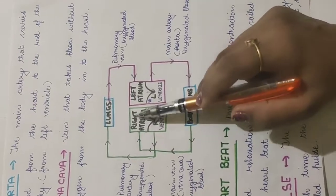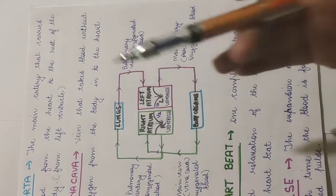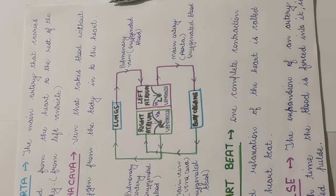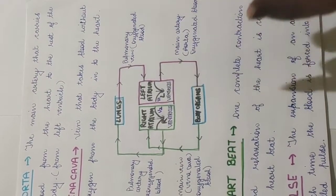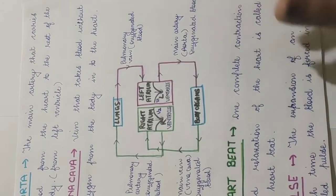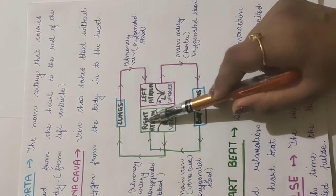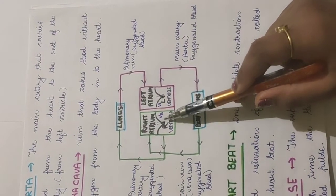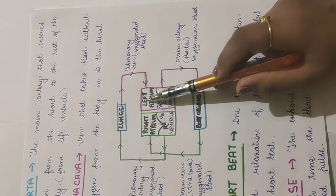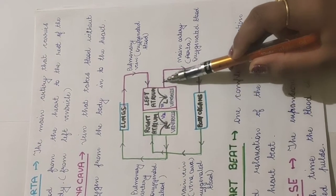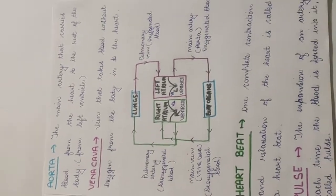The heart has two sides — left and right. When you face a diagram, what appears on the left is actually the right side of the heart and vice versa. The upper sections are the atria and the lower sections are the ventricles. Blood enters the right atrium, moves to the right ventricle, then goes to the lungs to get oxygenated. After gaining oxygen, it comes to the left atrium, moves to the left ventricle, and from there moves out of the heart to different parts of the body.